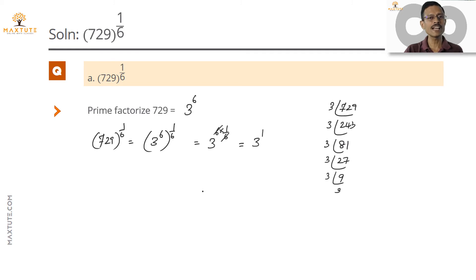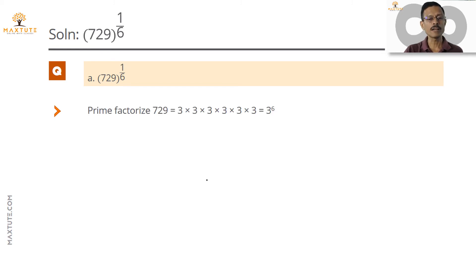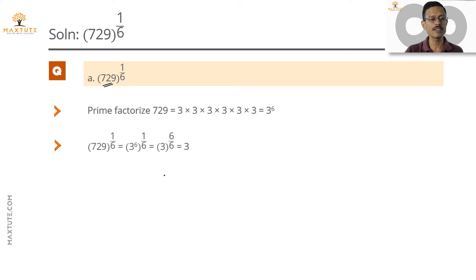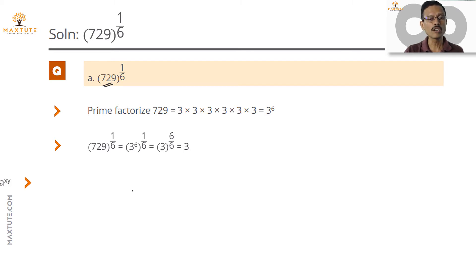To recap: we prime factorized 729 as 3^6, replaced 729 with 3^6, giving (3^6)^(1/6) = 3^(6/6) = 3. The rule of exponent used is (a^x)^y = a^(xy).